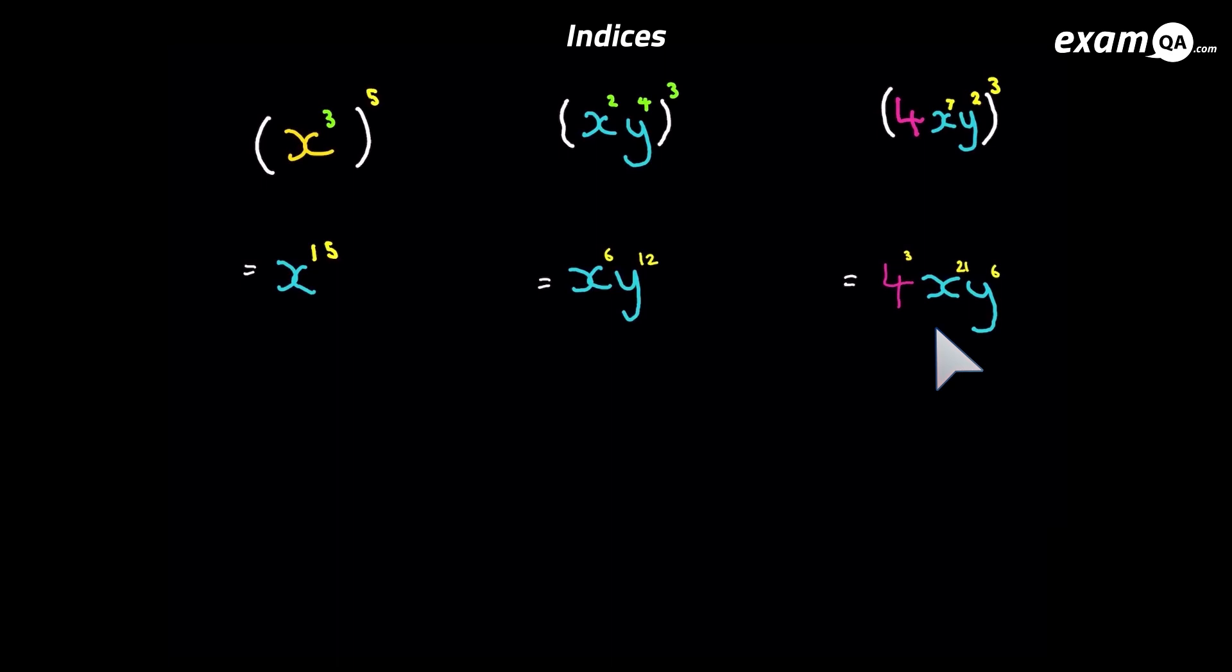Okay so we're nearly done. We just don't want to leave it as four to the power three. And you should be able to work out four to power three in your head. Four times four times four. Four times four is sixteen. Times another four gives us sixty-four. And there we have it.